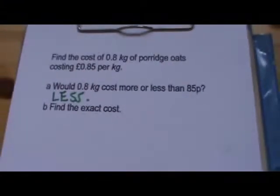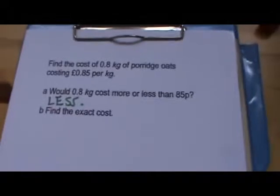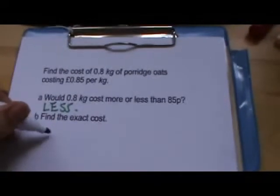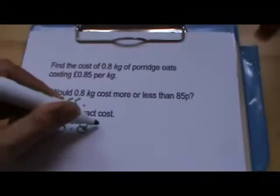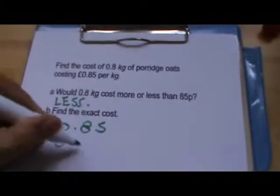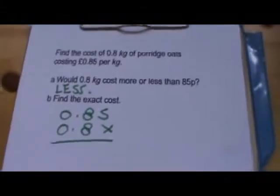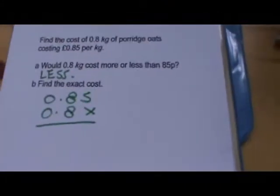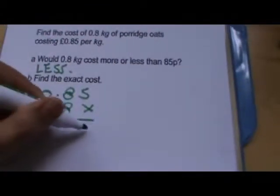So we've got to find the exact cost. So we're expecting it to be less than 85p. So we're going to work out 0.8 times 85p. Just ignore the points and work out the sums first. So we've got 8 times 5 is 40.